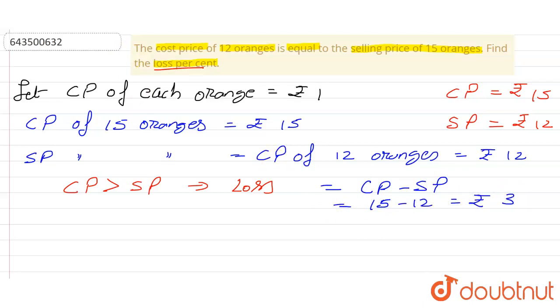Rupees 3 is the loss. Now if I keep all the values in the loss percent formula, loss percent is equal to loss divided by CP times 100 percent. So we have to keep all the values here.